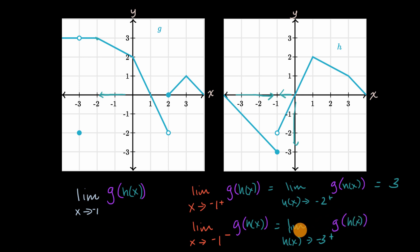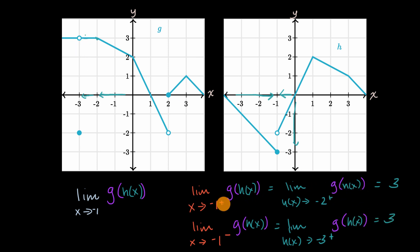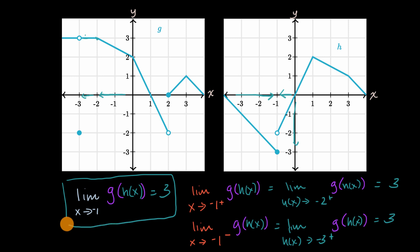So what is the limit as the input to g approaches negative three from the right? As we approach negative three from the right, g is right here at three, so this is going to be equal to three again. Notice the right-hand limit and the left-hand limit are both equal to three, so the overall limit equals three. This is a great example because the limit of the inner function h of x did not exist, but the limit of the composite function still exists.